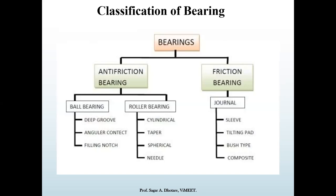Now the basic classification: there are two general types of bearings — friction bearing and anti-friction bearing. In a friction bearing, metal-to-metal contact occurs at the starting condition. In anti-friction bearings, the shaft and wheel are never in contact, so friction is essentially eliminated, though the rolling element type affects the amount of friction.